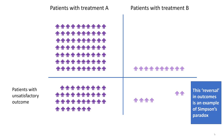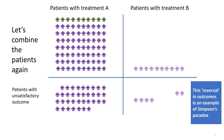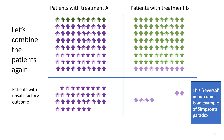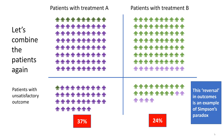This reversal in outcomes is an example of Simpson's paradox. Now let's combine the patients again — adding those who got treatment A with small stones, those with treatment B and small stones, and adding the failures. There we are, back to the aggregated data. You can see that treatment A is better in each subcategory of patients, but is worse overall.